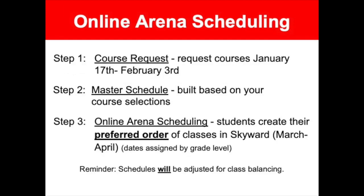The online RHNA scheduling process consists of three steps. The first step is the course request process where students enter their course requests and their alternate course requests in Skyward between January 17th and February 3rd. In the second step, the master schedule is built by administration using students' course requests submitted in Step 1. In Step 3, students go back into Skyward in their student access account and put their schedule in their preferred order during a designated three-day window between the dates of March and April. The exact date will be shown on another slide.